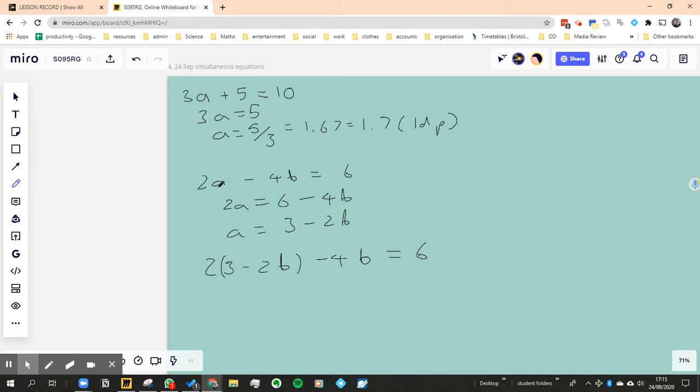That's my first step, this is my second step, this is my third step. Now what I did in my fourth step is I took this part from the third step and put it into there. So instead of writing a, I wrote what a equals.